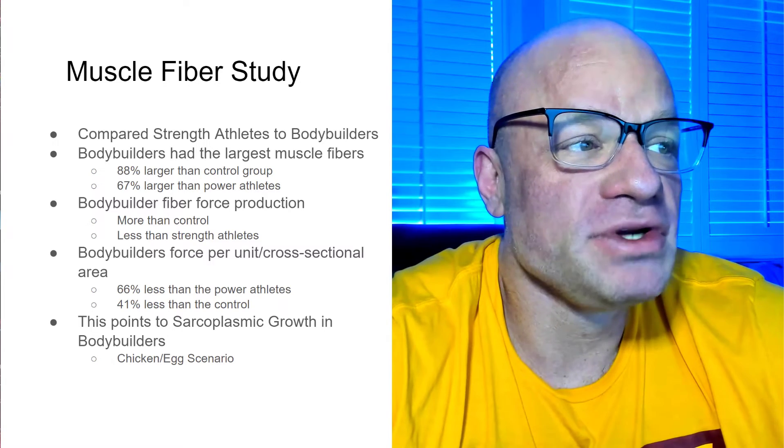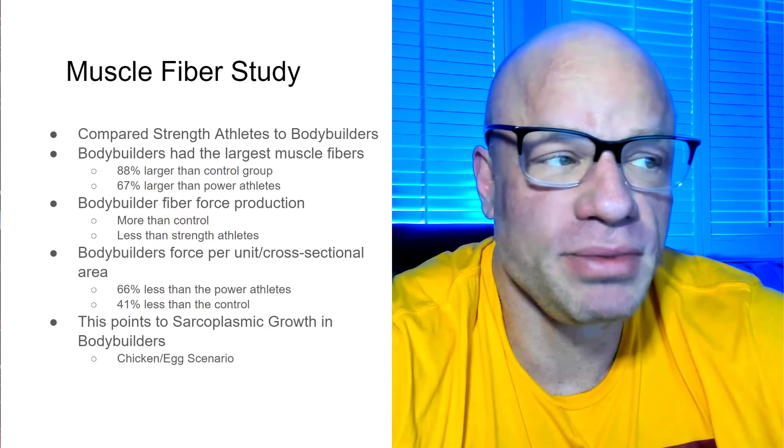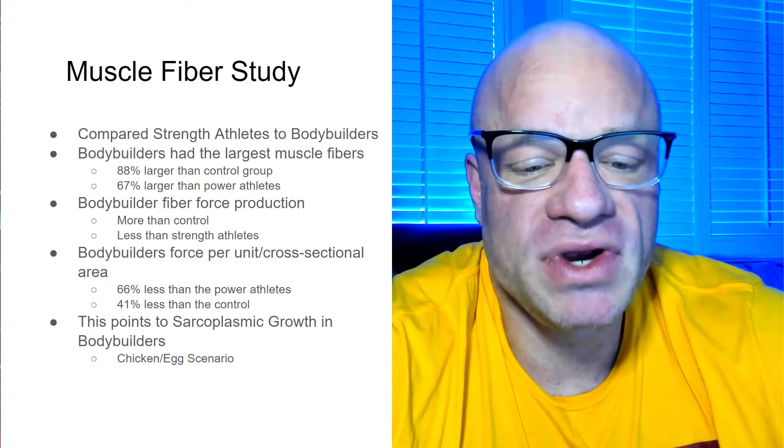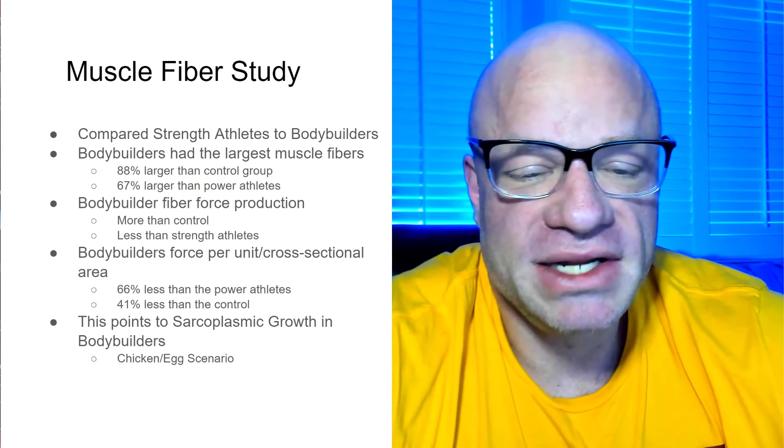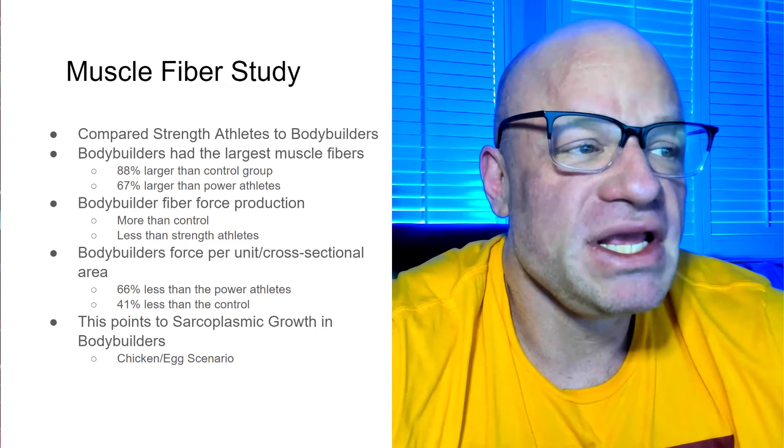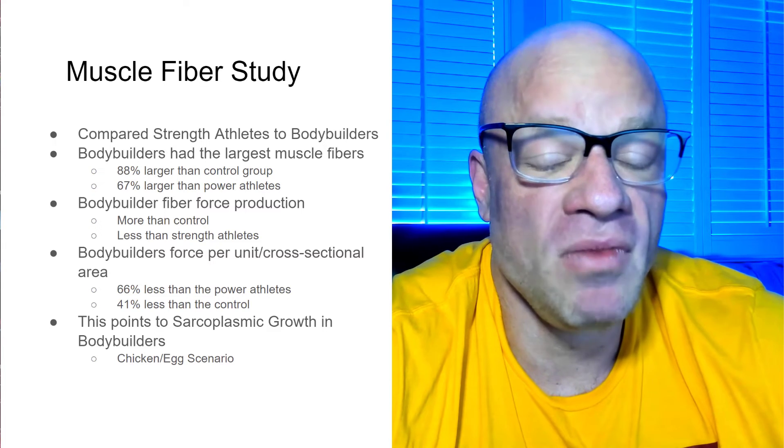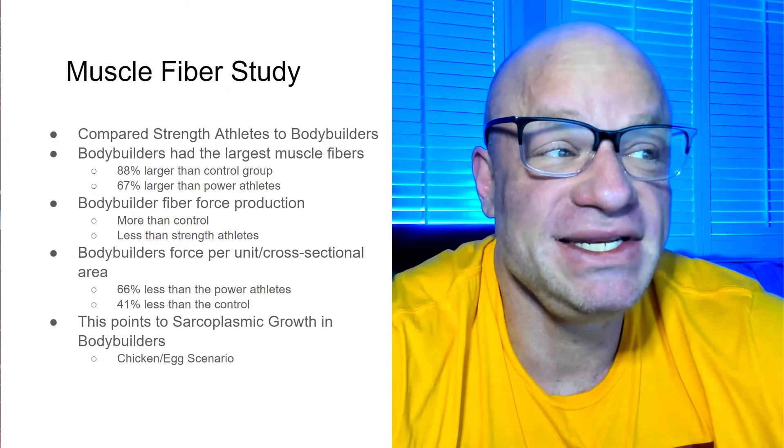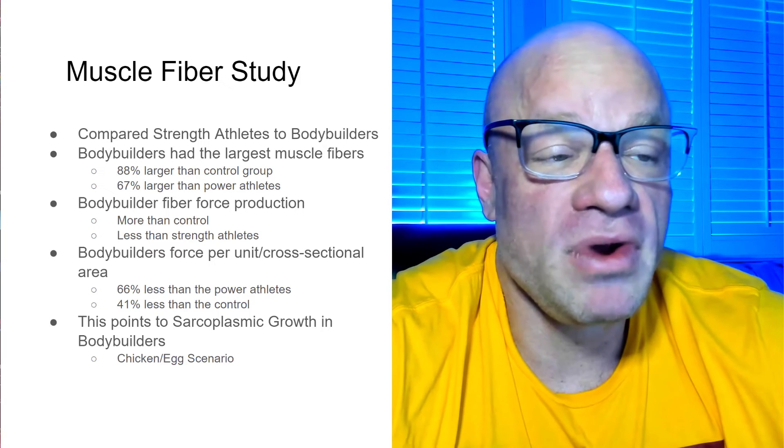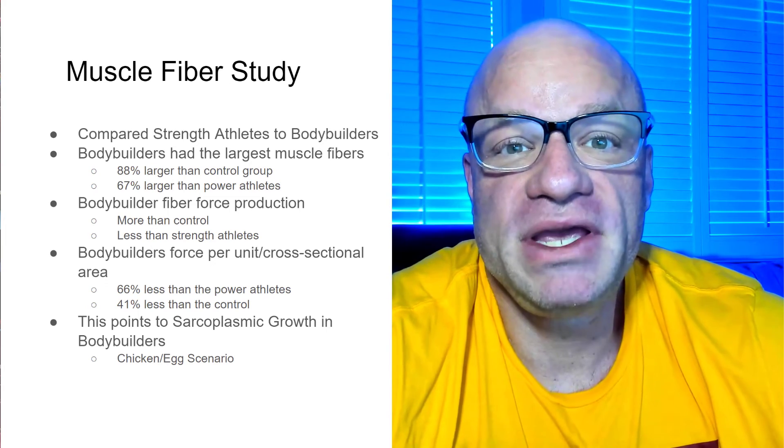The bodybuilder fiber force production was more than the control group and slightly less than the strength athletes. So, they had less force production. Bodybuilders force production per cross-sectional area. So, this is where you're measuring per square inch versus the other athletes. It was 66% less than the power athletes. So, the power athletes were generating more force production per cross-sectional area, 66% more than the bodybuilders. And then the control group, they were 41% less than the control group as well. So, this would also point towards sarcoplasmic hypertrophy.